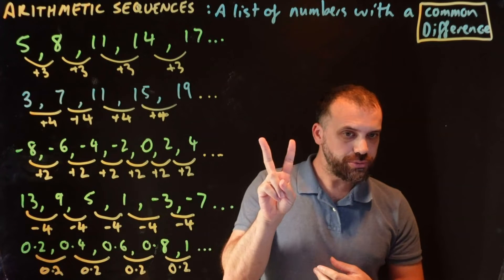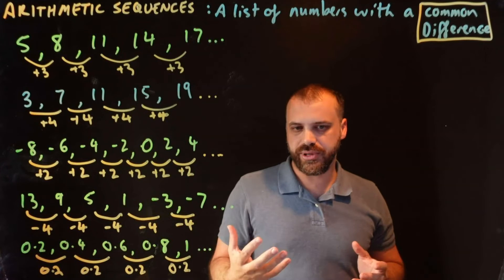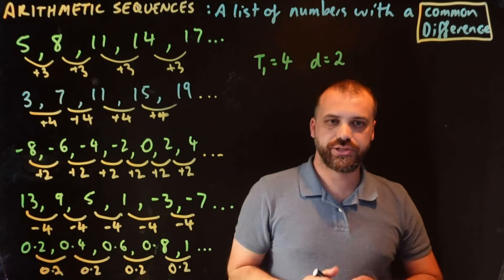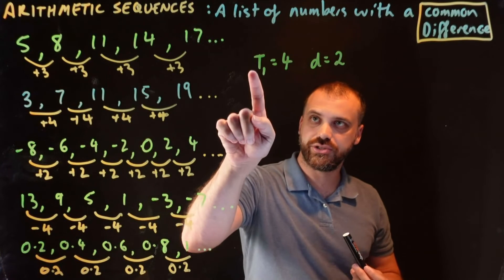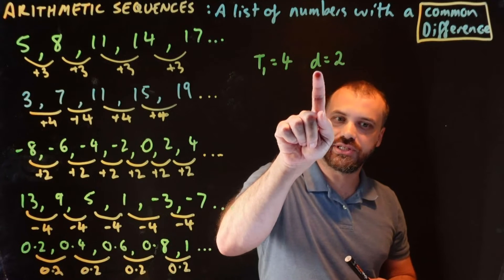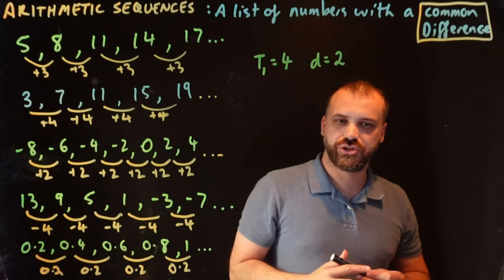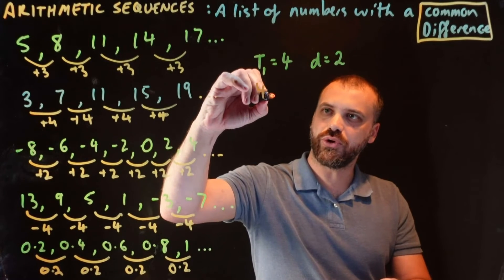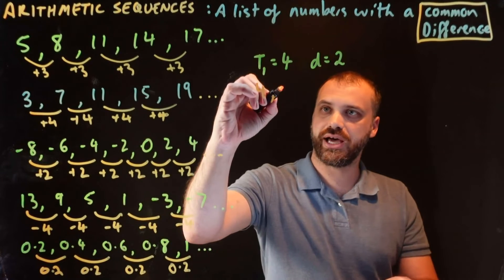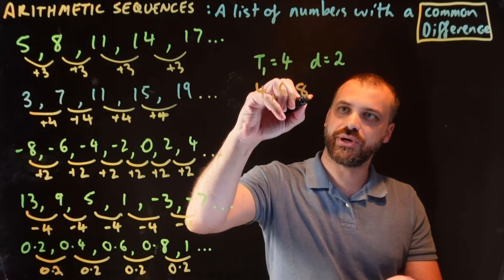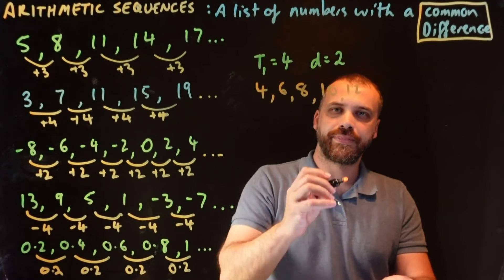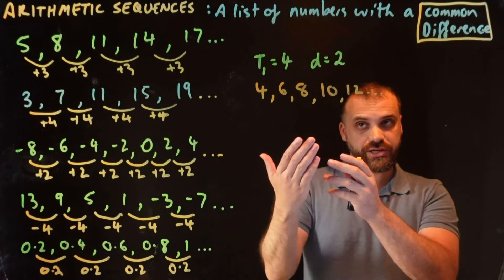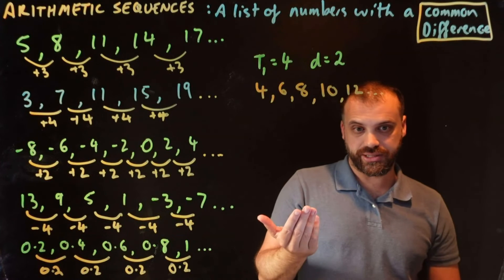If I give you just two pieces of information you can create an arithmetic sequence as long as you like. For example: term one equals four and the common difference d is two. We start with term one — four — then add two to get six, then add two to get eight, and so on. Just with two tiny pieces of information we've defined the arithmetic sequence and we can write it out.